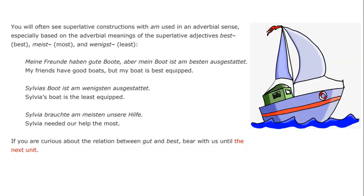There are a few commonly used superlative words used only as adverbs, such as "höchst" (highly), "äußerst" (extremely), and "meistens" (mostly). For example, "dieses Buch ist höchst interessant" — this book is highly interesting. The textbook also tells us that you will often see superlative constructions with "am" used in an adverbial sense, especially based on the adverbial meanings of "best," "meist," and "wenigst." For example: "meine Freunde haben gute Boote, aber mein Boot ist am besten ausgestattet" (my boat is the best equipped); "Silvias Boot ist am wenigsten ausgestattet" (Silvias boat is the least well equipped); "Silvia brauchte am meisten unsere Hilfe" (Silvia needed our help the most).